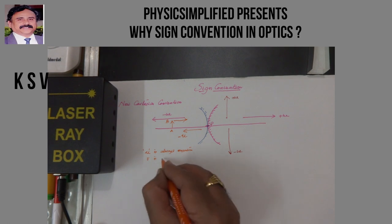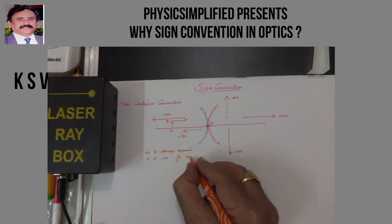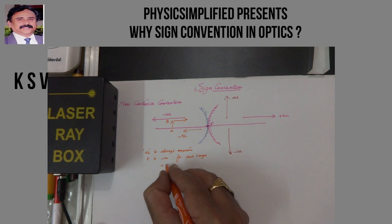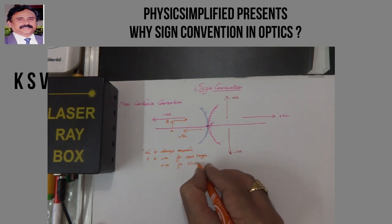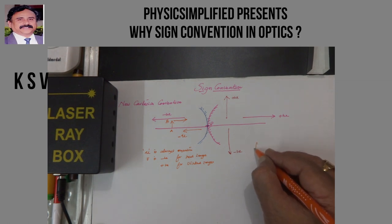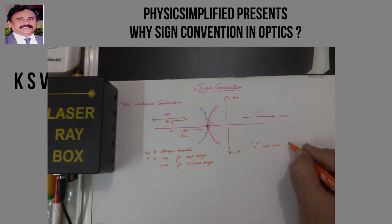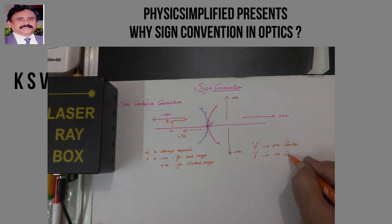V is negative for real images and positive for virtual images. The focal length F is positive for convex surfaces and the focal length is negative for concave surfaces.